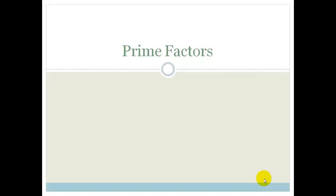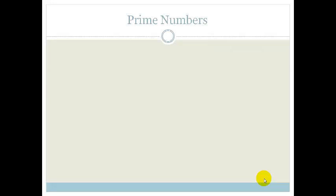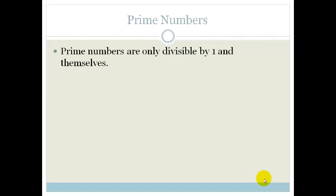What are prime factors? Prime numbers are numbers that are divisible by 1 and themselves, not including 1. So your prime numbers start 2, 3, 5, 7, 11, 13, etc. And they can only be divisible by 1 and by themselves.